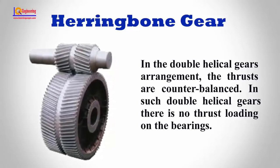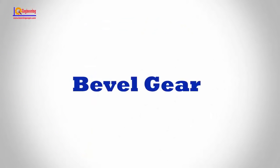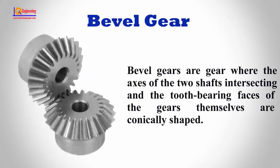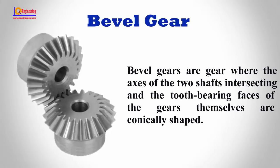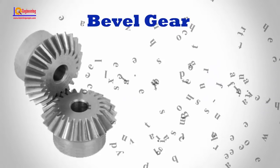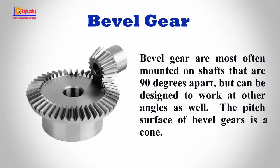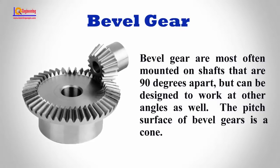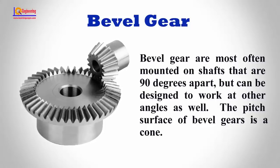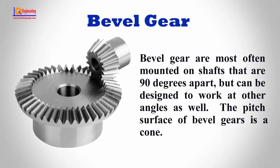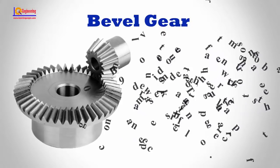Bevel Gear. Bevel gears are gears where the axes of the two shafts intersect and the tooth-bearing faces of the gear itself are conically shaped. Bevel gears are most often mounted on shafts that are 90 degrees apart, but can be designed to work at other angles as well. The pitch surface of bevel gears is a cone.